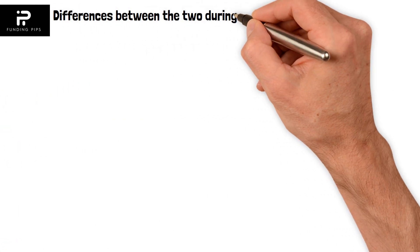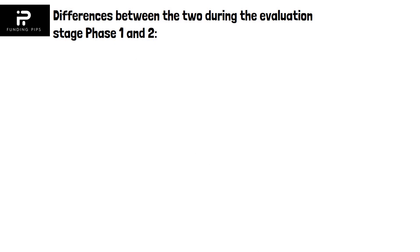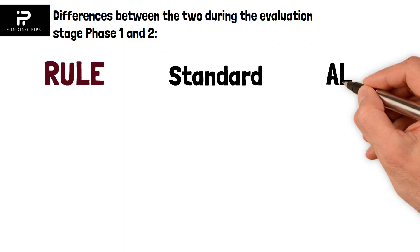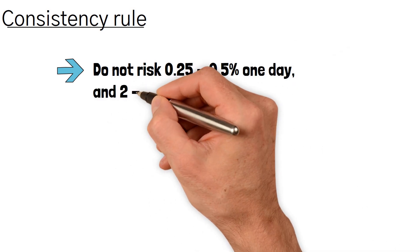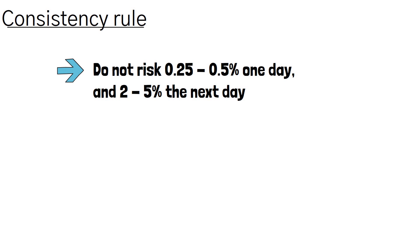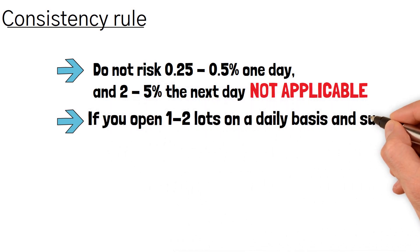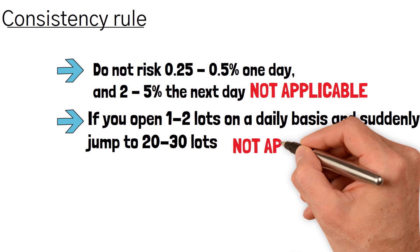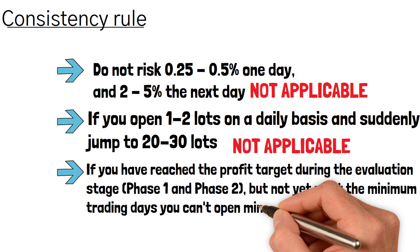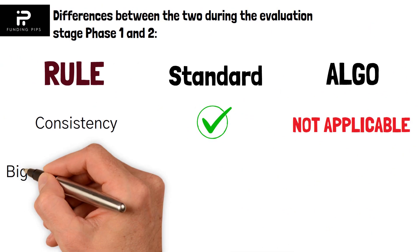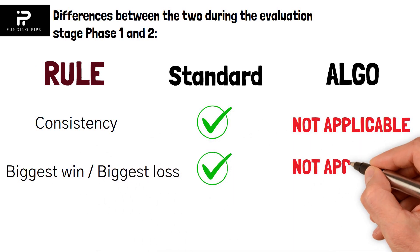Now let's look at the differences between the Algo and Standard accounts. Regarding rules during the challenge stage, there is a consistency rule applicable in the Standard account but not in Algo. The consistency rule means you cannot suddenly change your risk from 0.25–0.5% per trade to 3–4% in a single trade, and you cannot jump from 1–2 lots one day to 30 lots the next. You also cannot open micro lots just to meet the minimum day criteria, and your biggest win should be greater than your biggest loss. In the Algo model, none of these consistency rules apply.